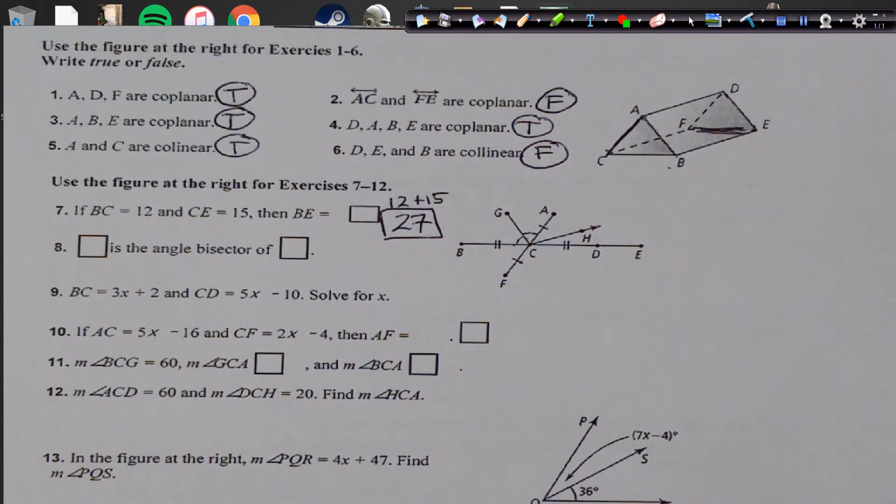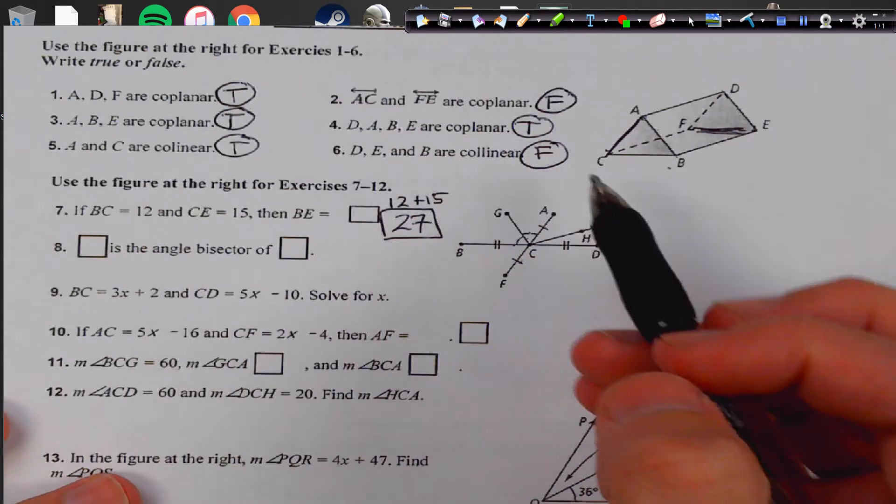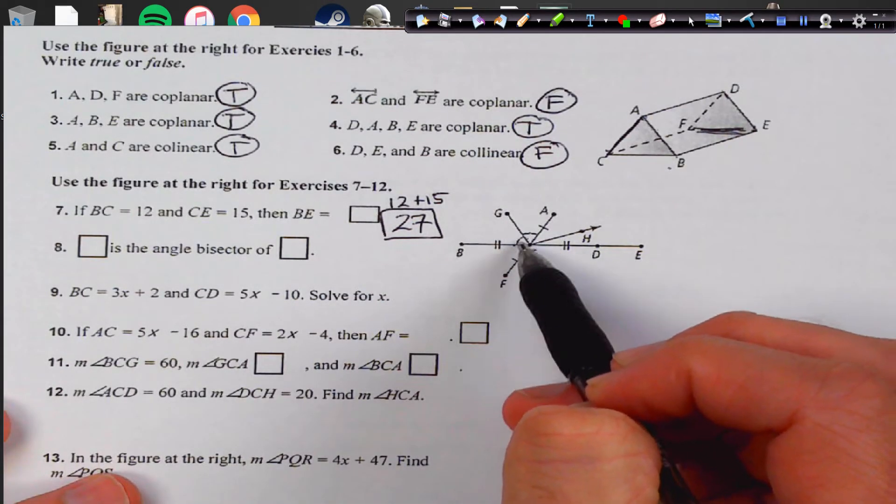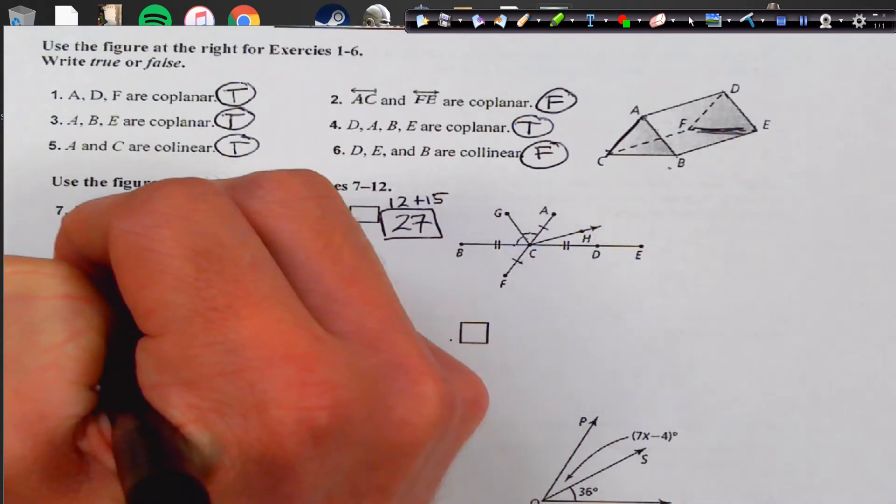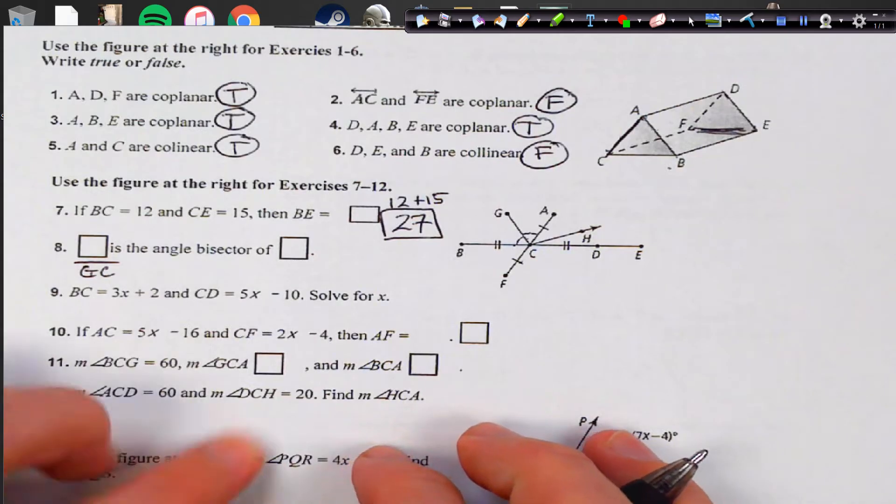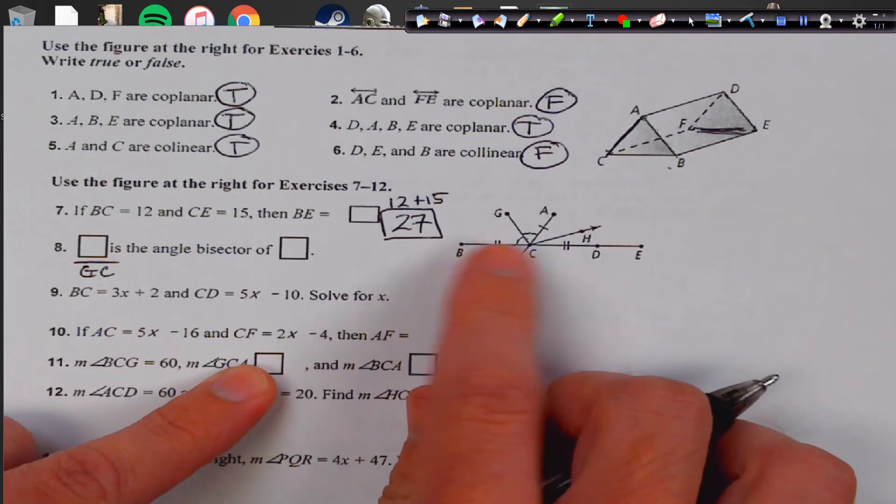Next, blank is the angle bisector. Well, for an angle bisector, I have two congruent angles that need to be present because I bisect it, and it's right here and here. So GC is bisecting it, so GC is the segment, and the angle it's bisecting is angle BCA.